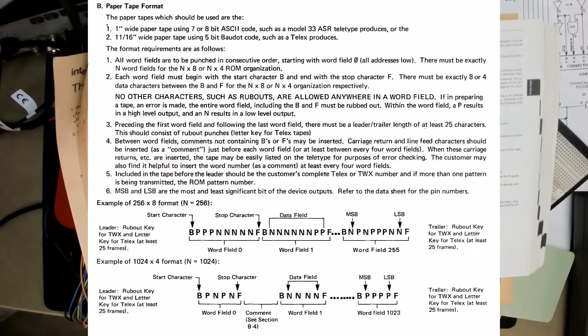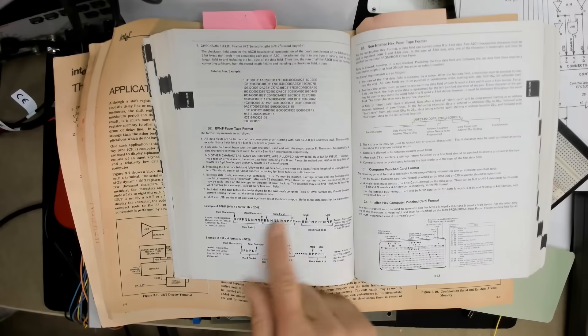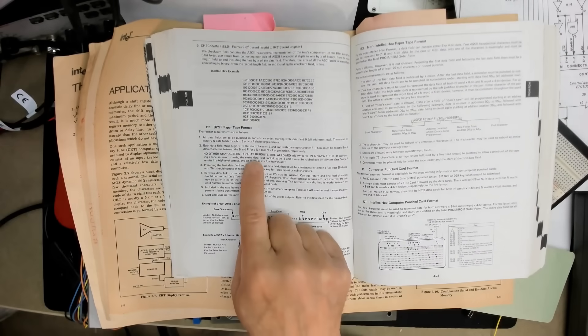As a last requirement, which was just common practice at the time, the paper tape required a 25 character leader and a 25 character trailer on the tape. So that's all there was to BPNF on paper tape.